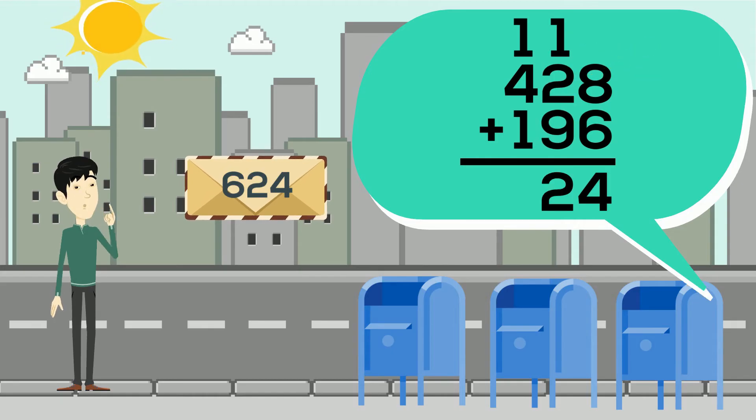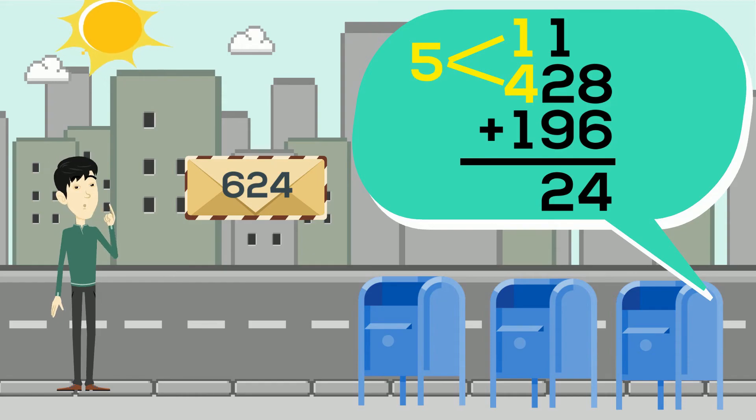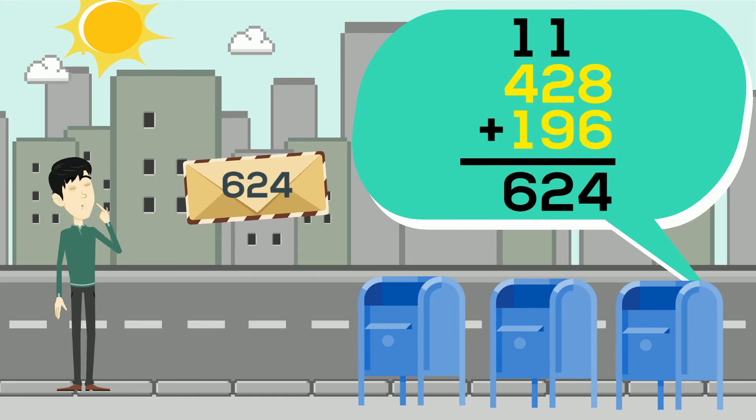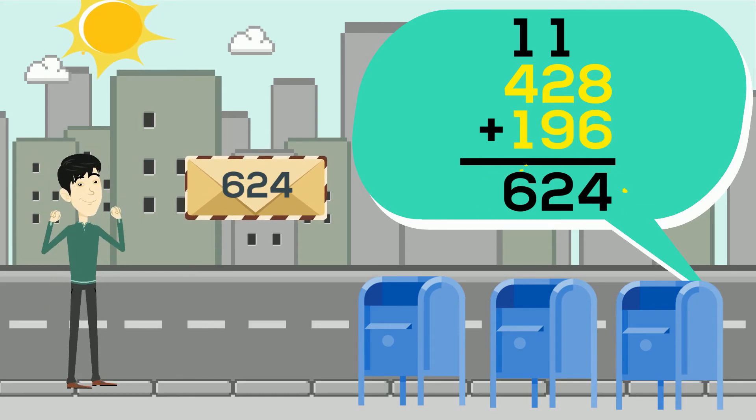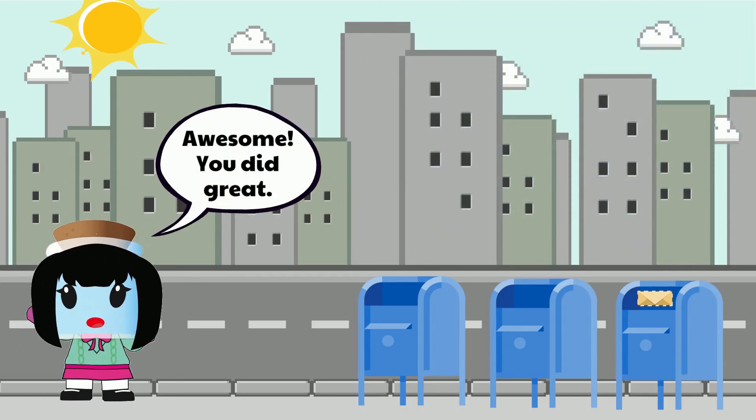Lastly, let's add the hundreds. 1 plus 4 equals 5, and 5 plus 1 equals 6. Therefore, 428 plus 196 equals 624. This envelope says 624, so let's drop it in the mailbox. Awesome! You did great!